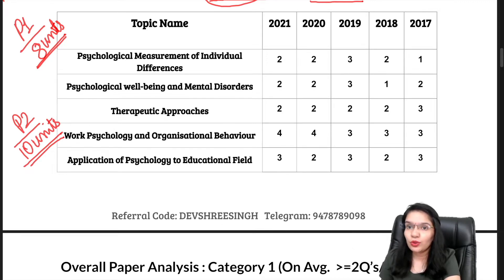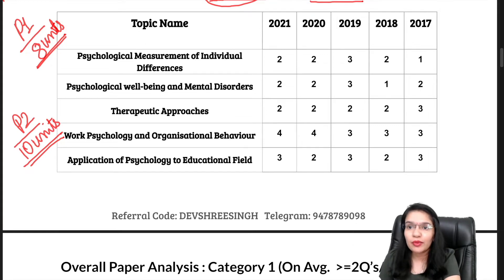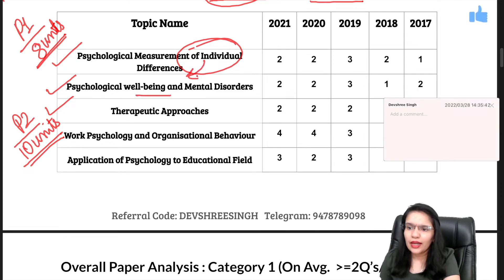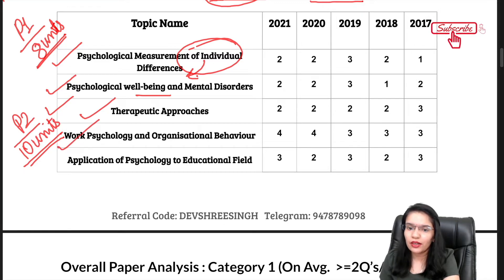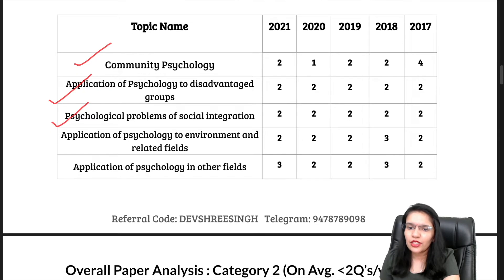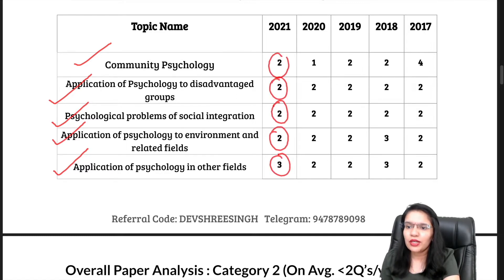It is not something new happening this year — it was very much the same before, with only minor changes each year. You can see all these units: Psychological Testing, Individual Differences, Wellbeing and Mental Disorders, Therapeutic Approaches, Work Psychology and Organizational Psychology, Education Psychology, Community and Disadvantaged Group, Social Integration, Environment, and Psychology in other fields. From here, you can see all the questions in 2021 and data for the past 4 years.